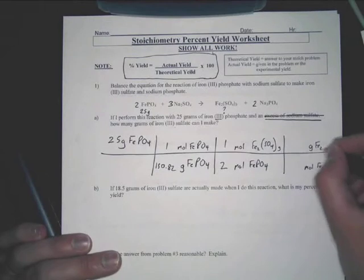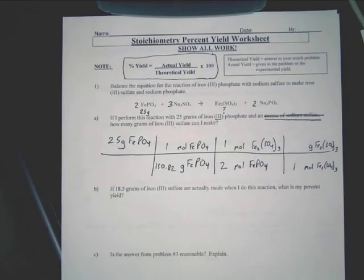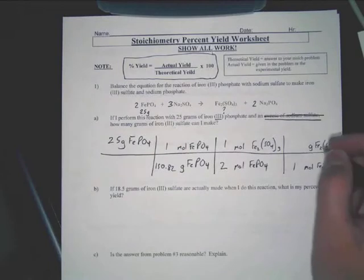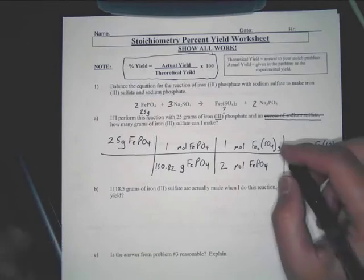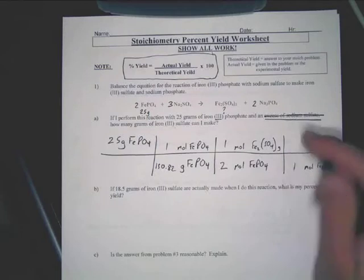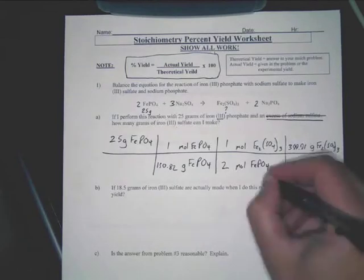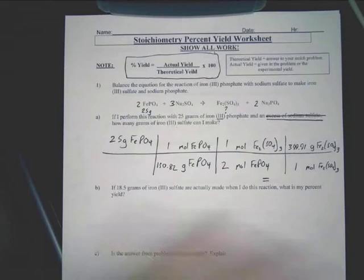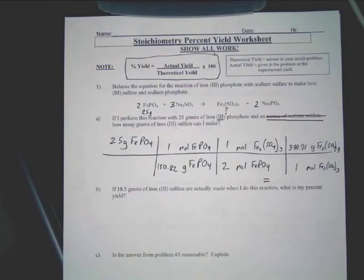Now we're going to convert to our new formula, which is going to be moles of Fe2(SO4)3, iron sulfate. What numbers do I put into these boxes here? The coefficients from the equation, right? So we look. We've got FePO4. In front of it, it has a 2, so put a 2 there. Iron sulfate, what does it have in front of it? It's got nothing, so you would put a 1. Remember, if it's blank, assume 1.